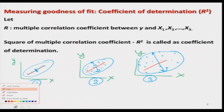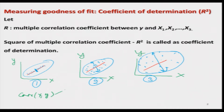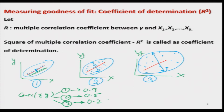If you try to use the concept of correlation coefficient, we try to find out the correlation coefficient between x and y. In case number 1 you can see that the points are very close to the line, so you can expect the correlation is around 0.9. In case number 2 the points are quite far away, so the correlation coefficient is suppose close to 0.5, and in case 3 the correlation coefficient will be something like 0.2. So whichever model has a higher correlation coefficient can be considered a good model, because the points are lying very close to the fitted line.